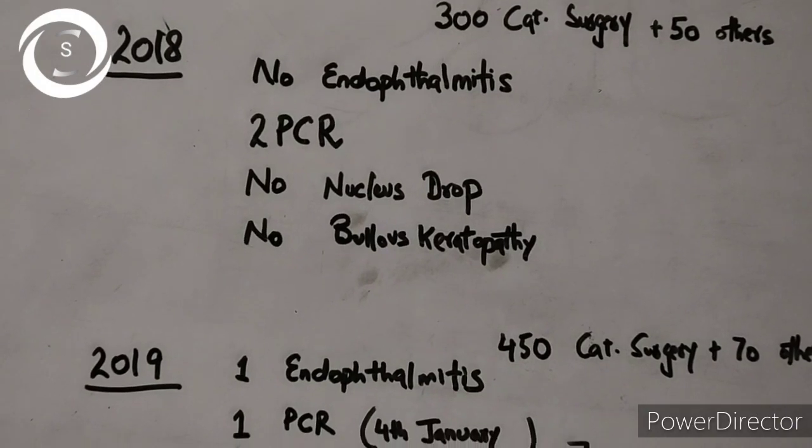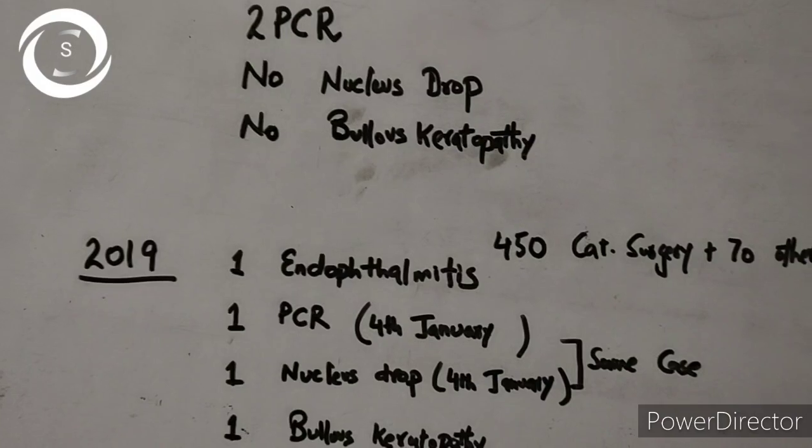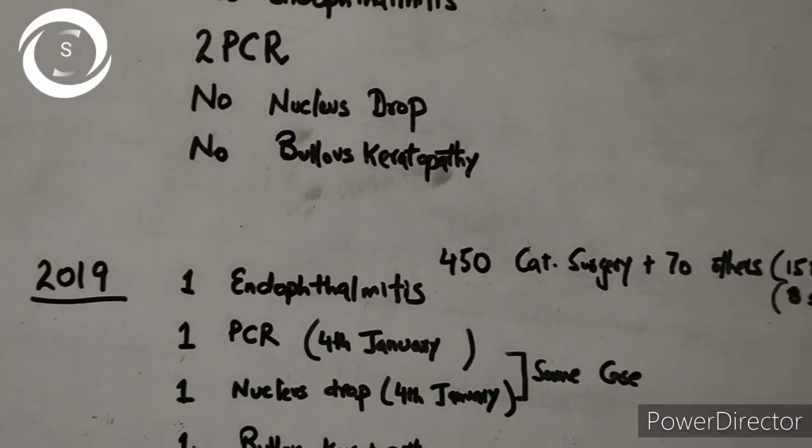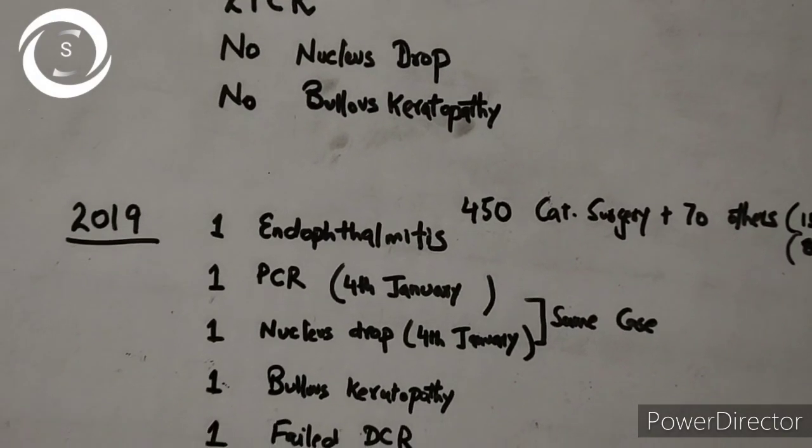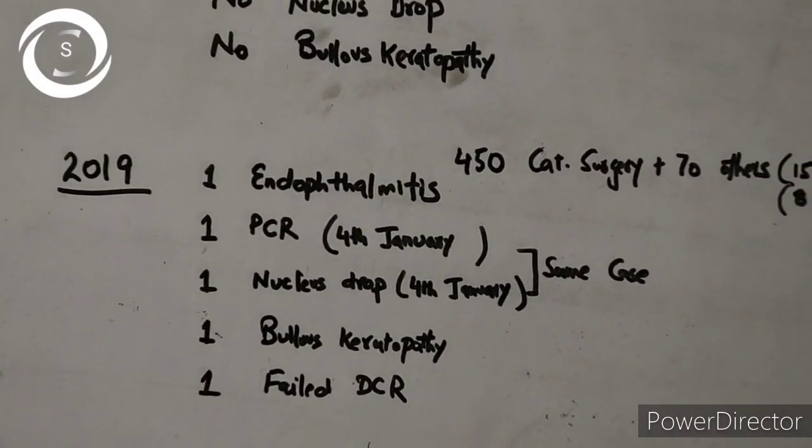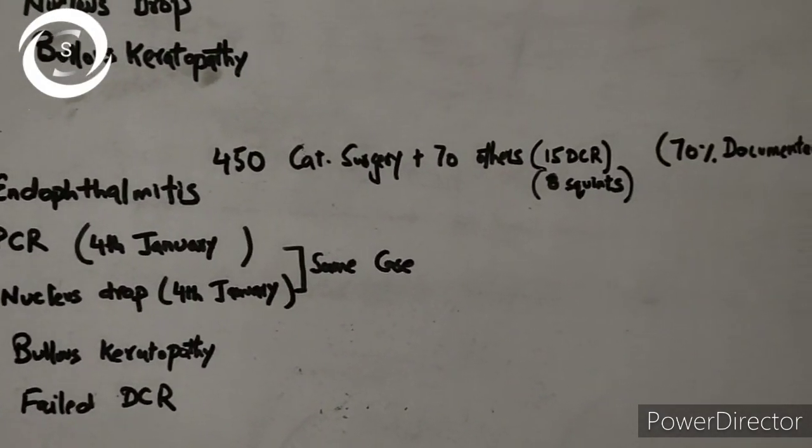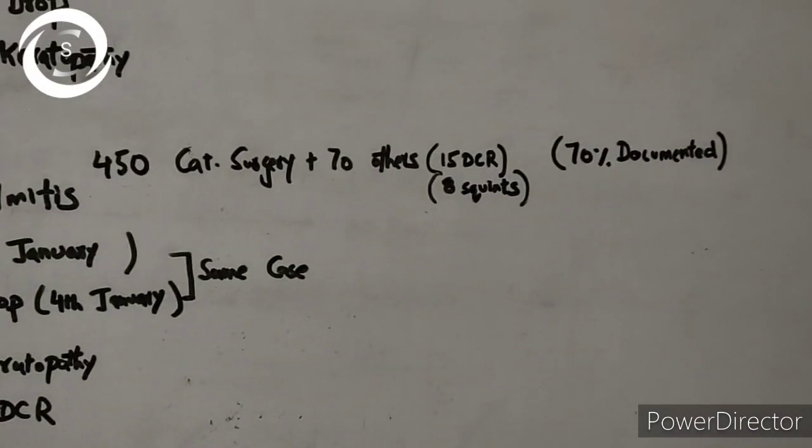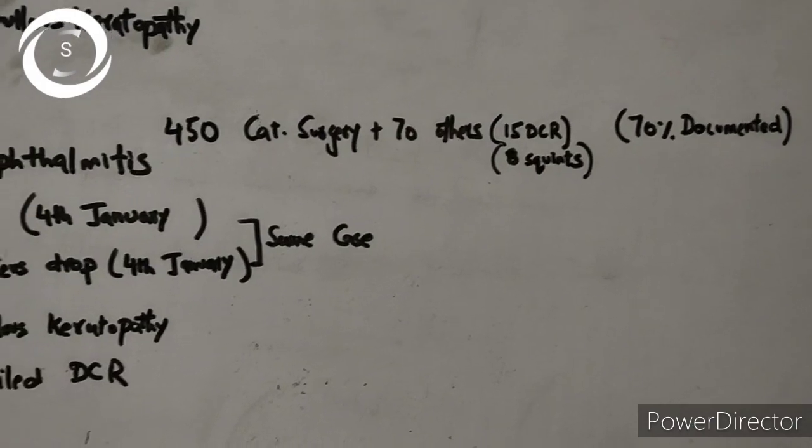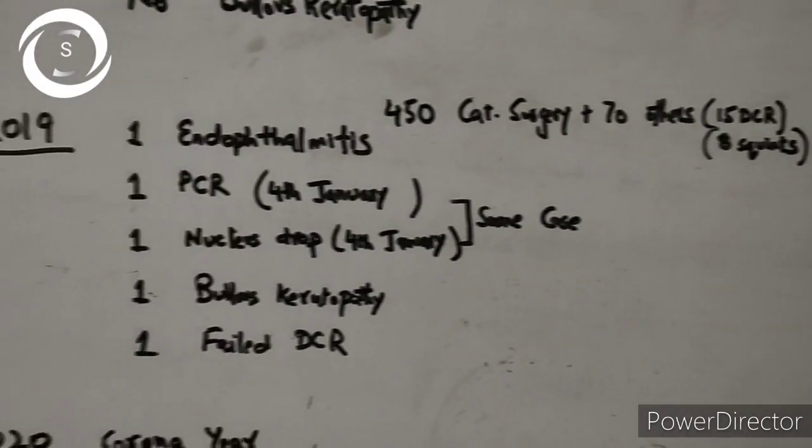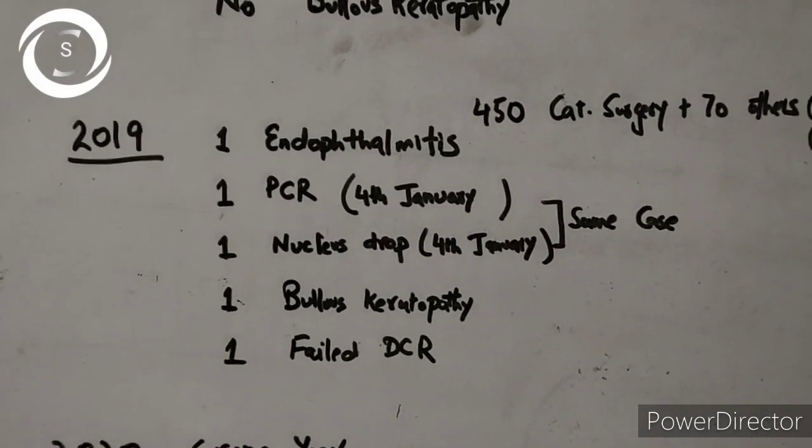But when 2020 arrived, I thought that this year I would like to document each and everything I do. So almost 95% of the work I have documented in 2020. As a general ophthalmologist or even a subspecialist, start keeping a record of your work. You'll be able to know about your work and also you can write articles and clinical audits.